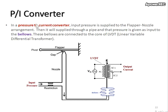This slide demonstrates the pressure-to-current converter mechanism. It is almost similar to a current-to-pressure converter, but this time the input pressure will be injected through this restriction and will flow to the bellows. The bellows will expand further if the input pressure is increased. If the input pressure is minimum, then the bellows will retract.